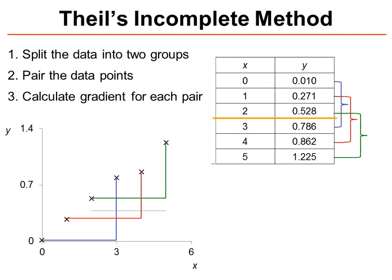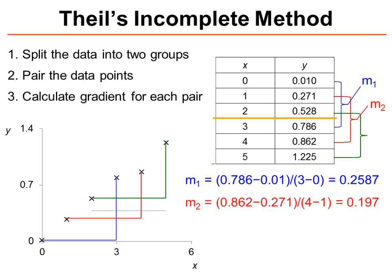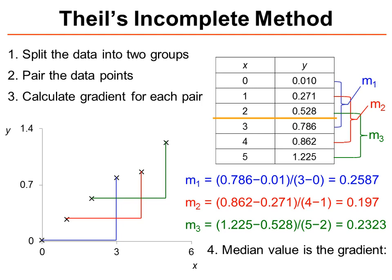The third step is that we need to calculate the gradient for each pair. So we do this just by taking the xy data points and working out the gradient between them. The fourth step in Thiel's incomplete method is that the median value of these gradients is the actual gradient for our line of best fit. So in this case, m equals 0.2323, because that's the median gradient from all of the different gradients that we've calculated.